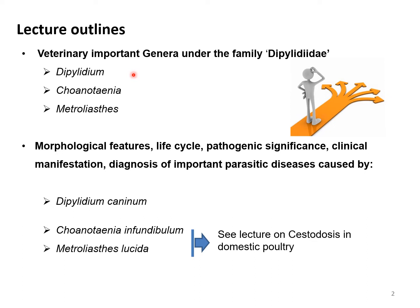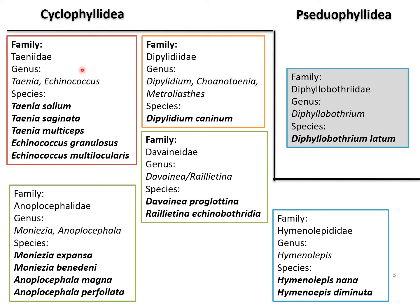Very important genera under the family Dipylididae — that is Dipylidium — will be discussed in this lecture. Choanotaenia and Metroliastes will be discussed in another lecture. This lecture will focus on the morphological features, life cycle, pathogenic significance, clinical manifestation, and diagnosis of Dipylidium caninum infection. For Choanotaenia infundibulum and Metroliastes lucida, please see the lecture on tapeworm infection in domestic poultry.